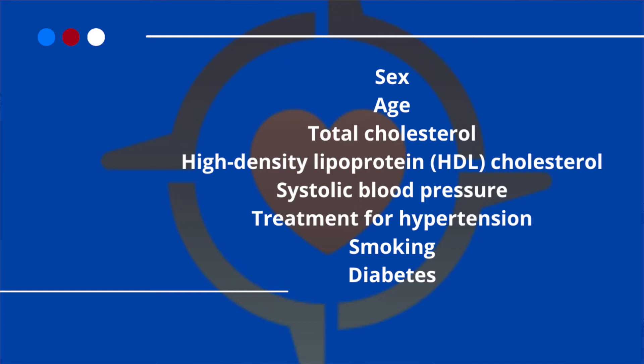This CVD risk calculator was prepared based on the medical history of 8,491 Framingham study participants. Analysis of the statistics revealed that a patient's risk of developing heart disease depends on the following factors: sex, age, total cholesterol, high-density lipoprotein or HDL cholesterol, systolic blood pressure, treatment for hypertension, smoking, and diabetes. For each of these features you may receive anywhere from minus 3 to plus 15 points depending on your gender — these are the so-called CVD points. The more points you get, the bigger your risk of cardiovascular disease. These points are then converted into percentages reflecting the risk of developing at least one cardiovascular disease in the next 10 years.